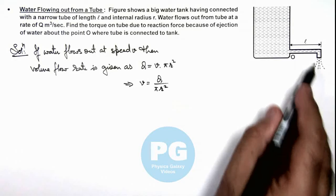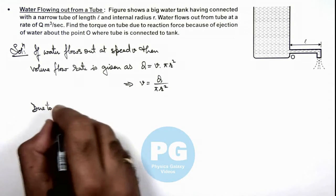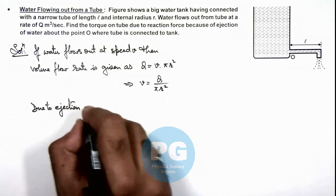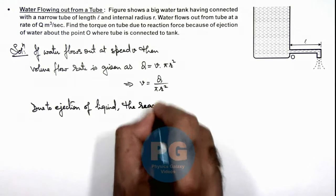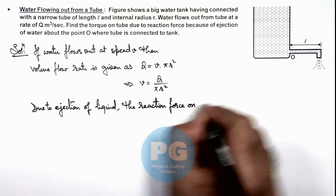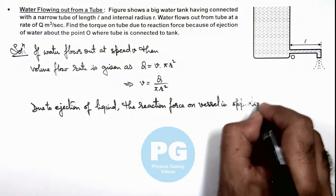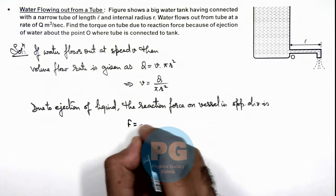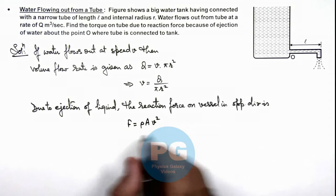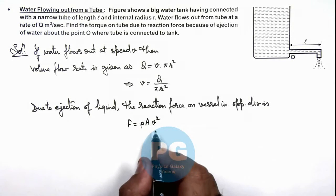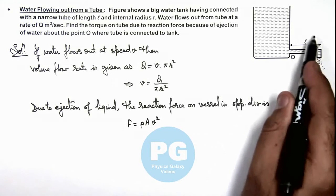If we have the flow velocity v and area, we can write: due to ejection of liquid, the reaction force on vessel in opposite direction is F = ρAv². This we already studied in concept video and calculated it by using the rate at which momentum is coming out. The same force will be exerted on the tube in opposite direction.